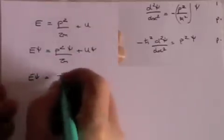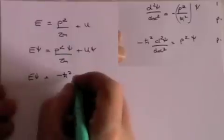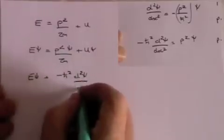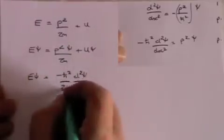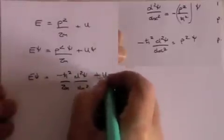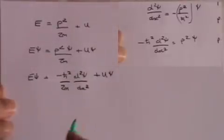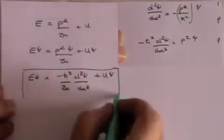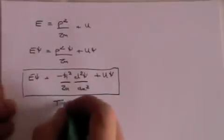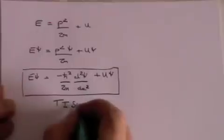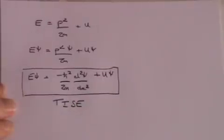But p squared psi is minus h bar squared d 2 psi by dx squared, and we've got 2m there, plus u psi. And that is the time independent Schrödinger equation. Simple as that.